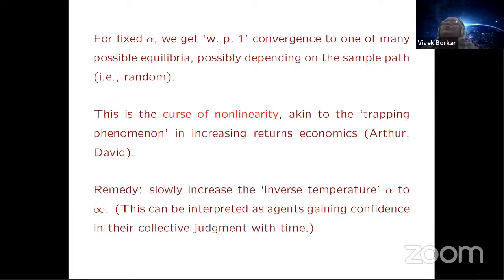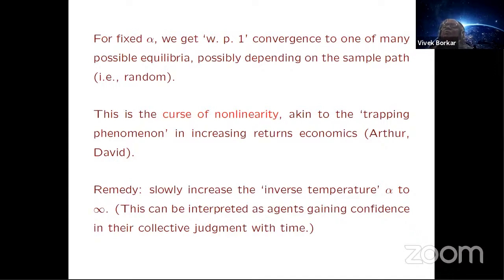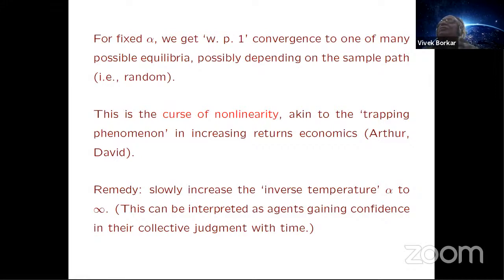For fixed alpha, you get with probability-one convergence to one of many possible equilibria, which can be a random limit depending on the particular sample path. This is what one might call the curse of non-linearity — called the trapping phenomenon in the literature on increasing returns in economics, pioneered by Brian Arthur and Paul David. The idea is that there are multiple equilibria and you can get trapped in one of them, which may not be optimal in terms of rewards. Some equilibria may be better than others, but you can't choose — with some probability you may get into a suboptimal equilibrium.